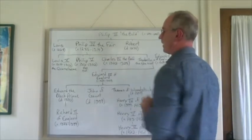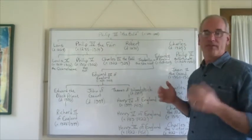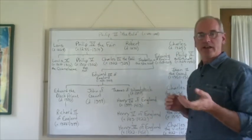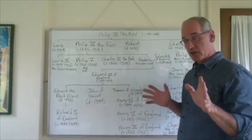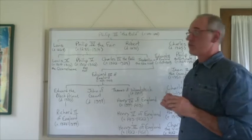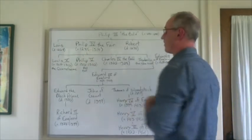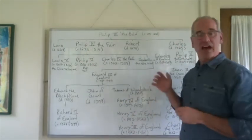He has Louis, Philippe, Robert, and Charles. Now, Louis and Robert die young, and so when Philip dies in 1285, he only has a couple of sons left. The oldest is Philip, called the Fair, Philippe the Fair.